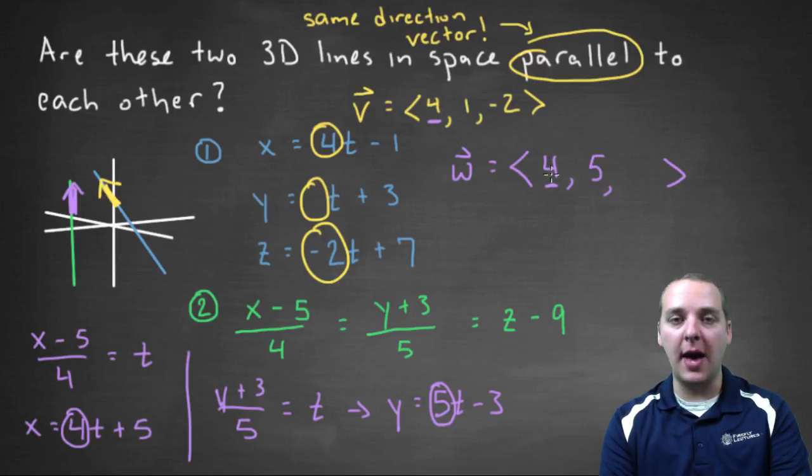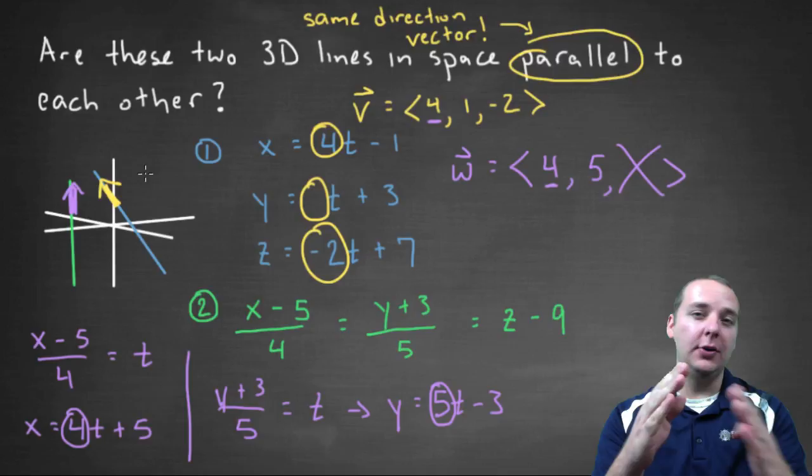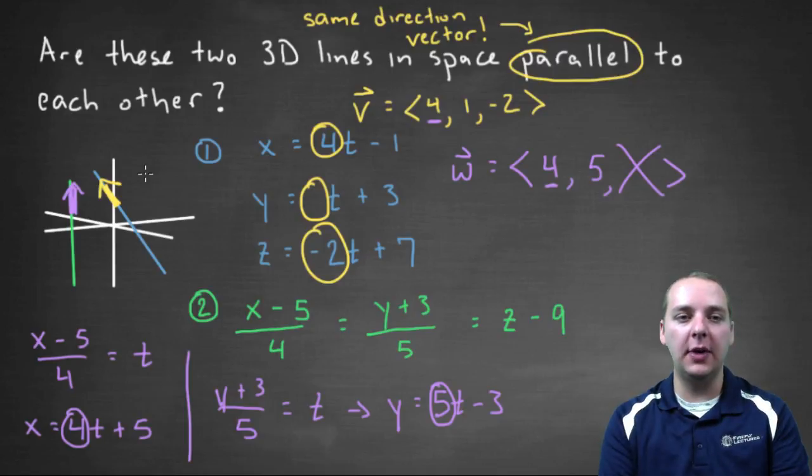The first components match, but the second component, one is a 1, one is a 5. So I can tell that these are not going to be scalar multiples of each other. So that means that one direction vector is pointing in a different direction as the other direction vector, which means these two lines cannot be parallel.